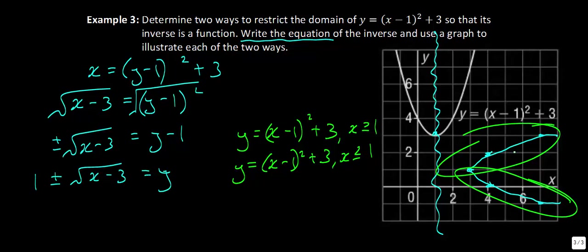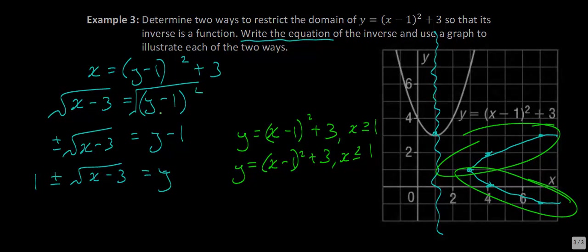That concludes this lesson. To summarize the key points: to graph an inverse function, you basically just switch the ordered pairs. To find the inverse relation or inverse function as an equation, you just switch your x and y and then solve for y.